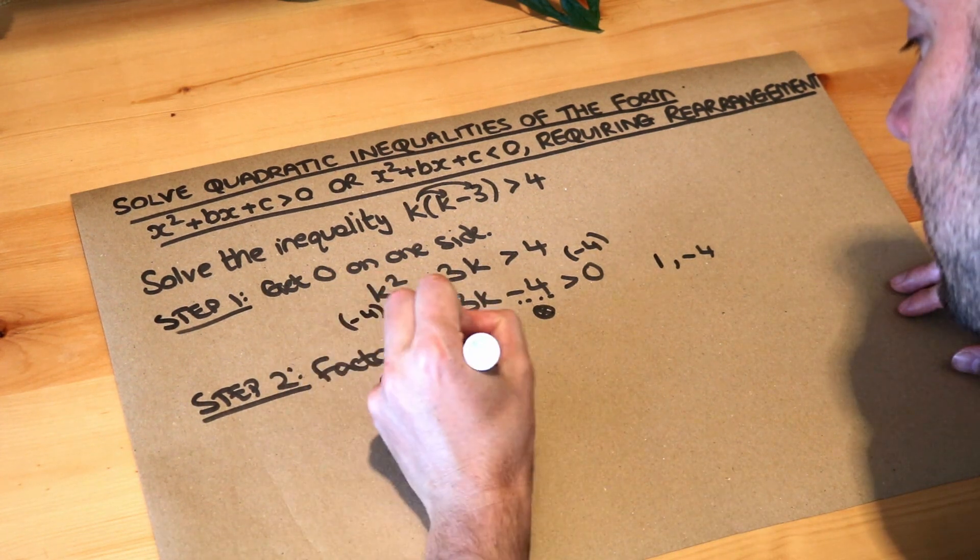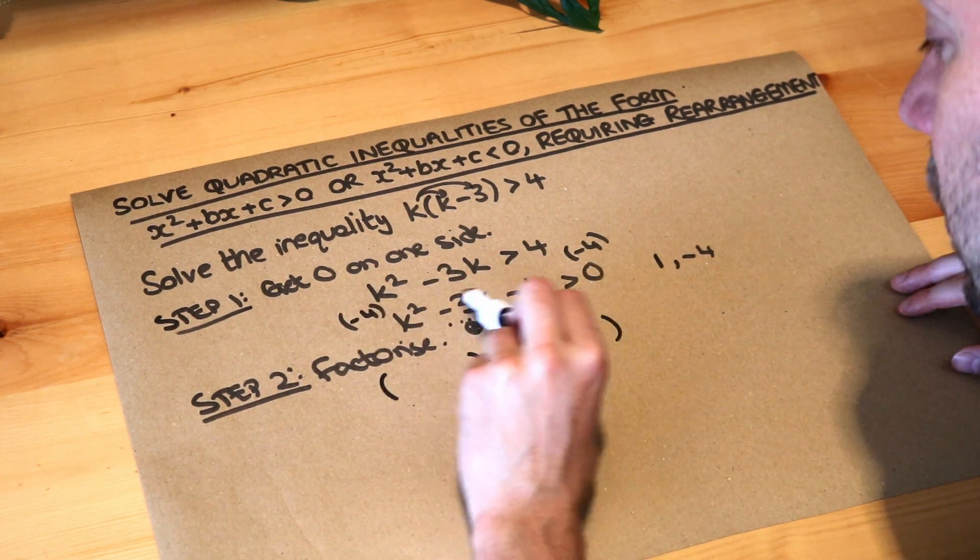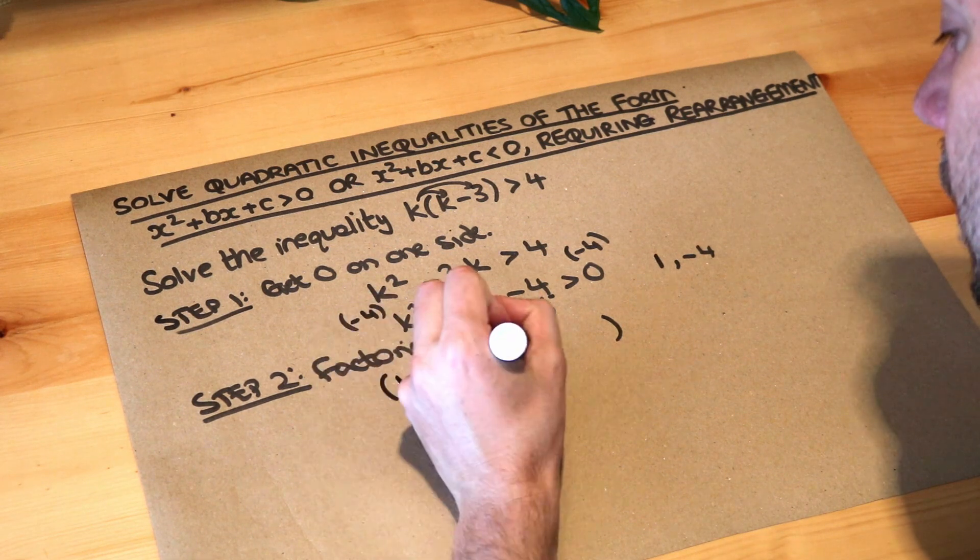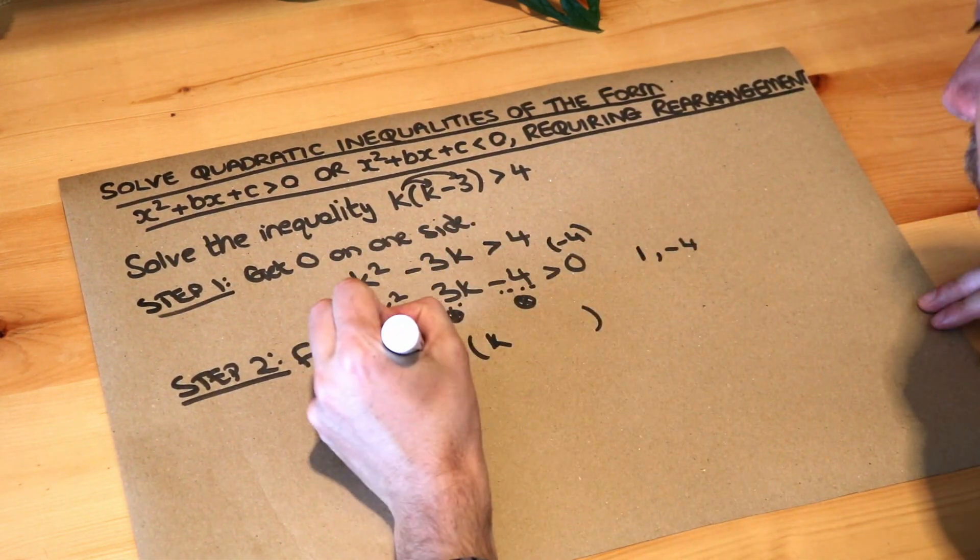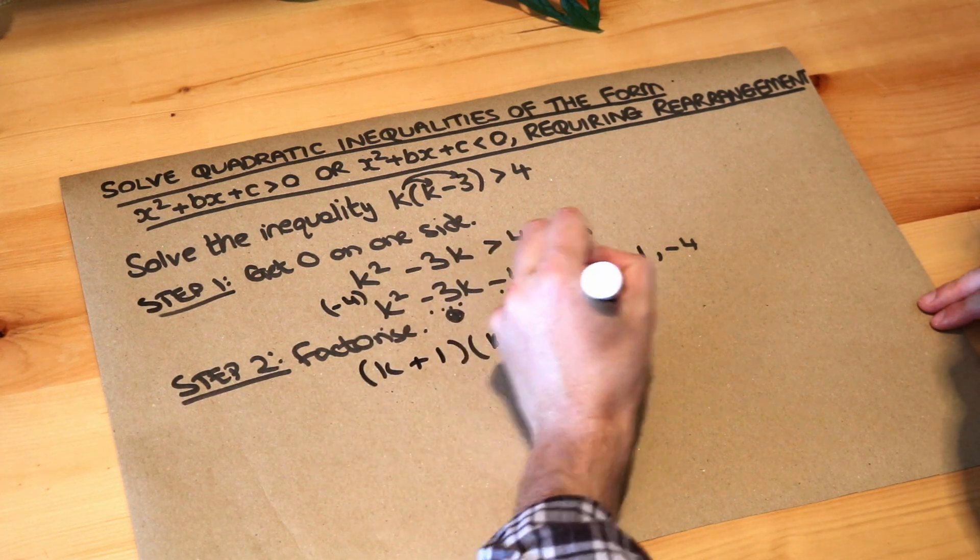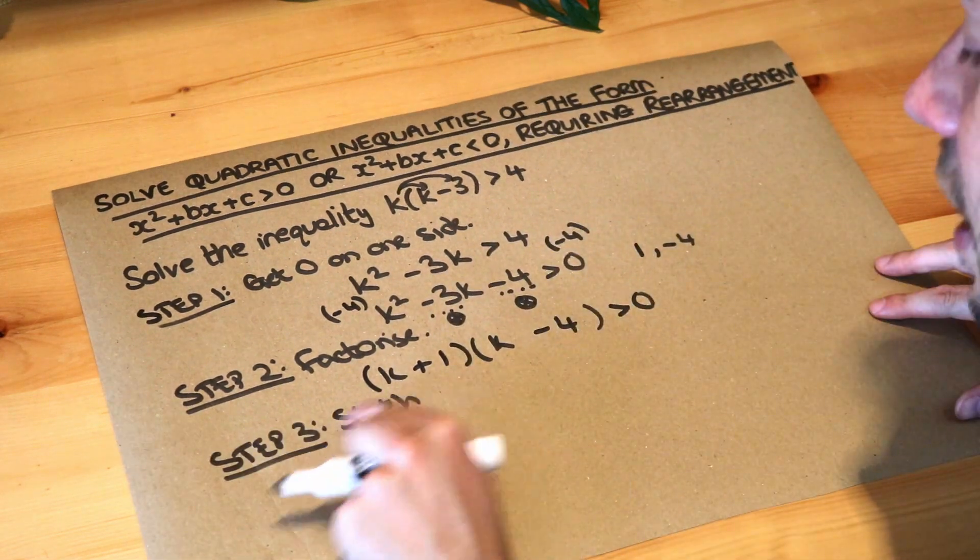So that means this factorises with two brackets. It's in terms of k, so we've got k here and we've got the two numbers one and minus four. So k plus one times k minus four is greater than zero. And what's step number three? We then sketch that quadratic.